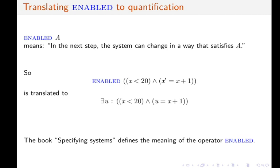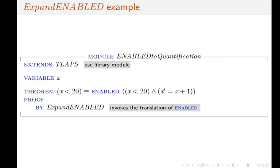So this is why x', which is the value of variable x in the next state, is replaced by u and u is bound by existential quantification. You can find more about TLA+ and the definition of operator ENABLED in the book Specifying Systems.